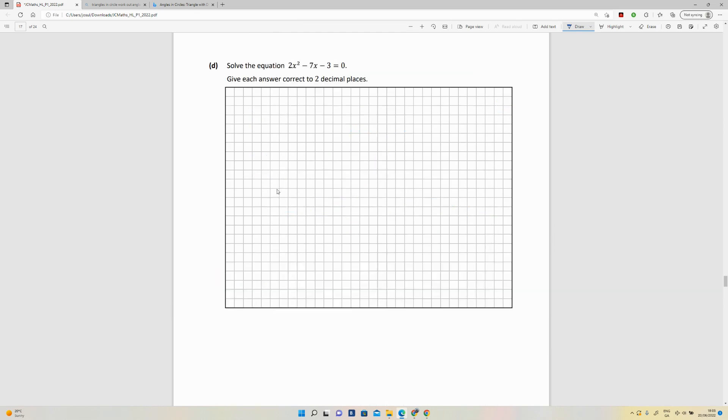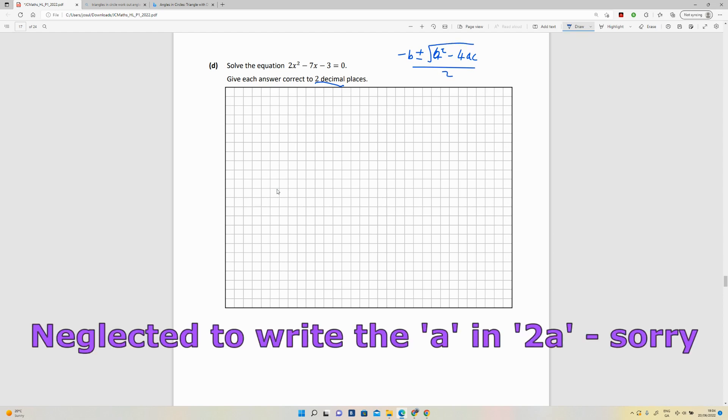So part d: solve the equation, this one here, and give your answer correct to two decimal places. Now the fact that it's saying that suggests that when I factorize this it isn't going to give me a nice handy answer, and that is true just by looking at it. So it means I'm going to have to use the minus b formula.